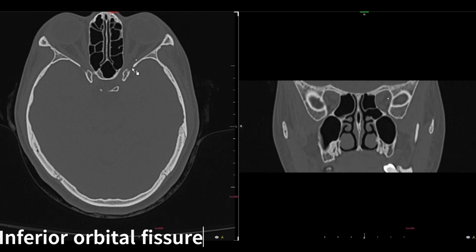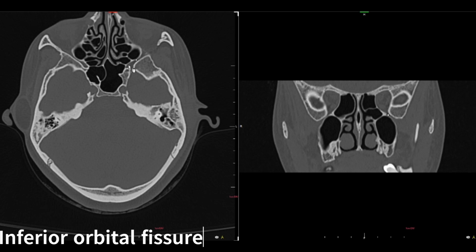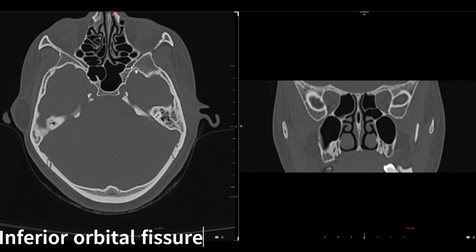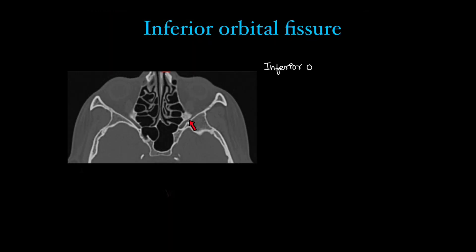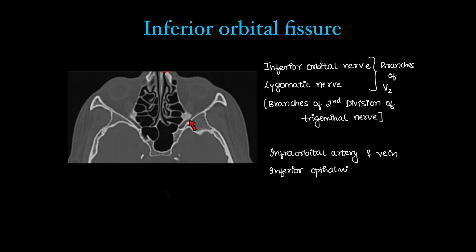Next we have the inferior orbital fissure. Going down posterior to the orbit, you can see this projection — that is the inferior orbital fissure. On coronal, that is the inferior orbital fissure, which joins the pterygopalatine fossa — a pyramidal-shaped structure behind the maxillary sinuses. Contents include the inferior orbital nerve and zygomatic nerve, which are branches of the second division of the trigeminal nerve (V2), as well as the infraorbital artery and vein, and the inferior ophthalmic vein.